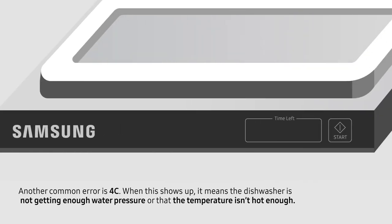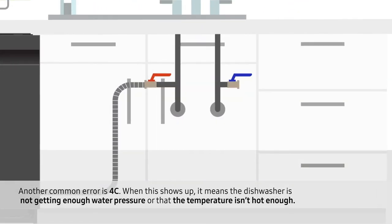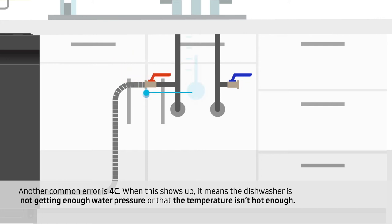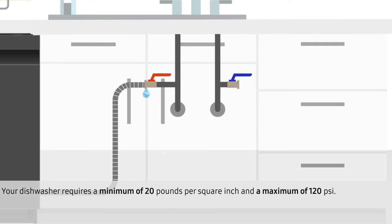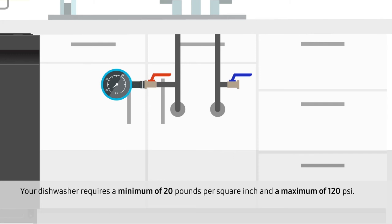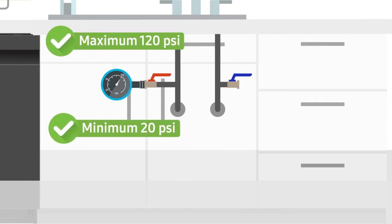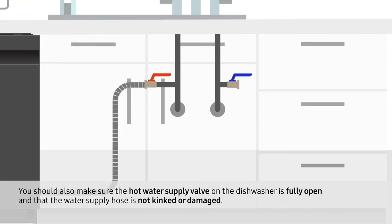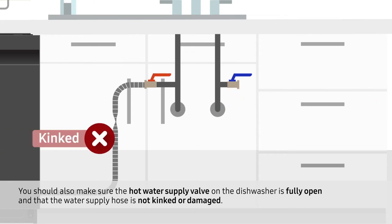Another common error is 4C. When this shows up, it means the dishwasher is not getting enough water pressure or that the temperature isn't hot enough. Your dishwasher requires a minimum of 20 pounds per square inch and a maximum of 120 psi. You should also make sure the hot water supply valve on the dishwasher is fully open and that the water supply hose is not kinked or damaged.